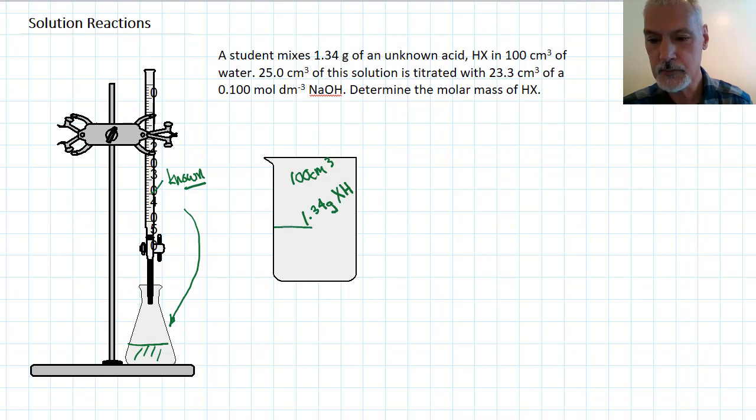We take a portion of this solution, not all of it, 25 mils of it, and place it down here in a flask. So this becomes our unknown.